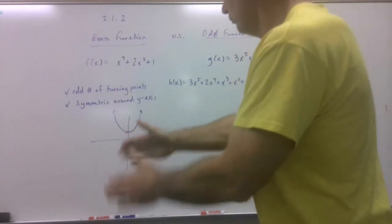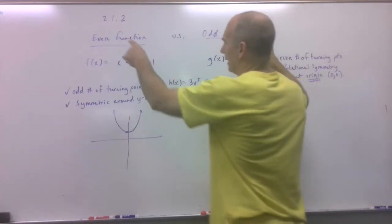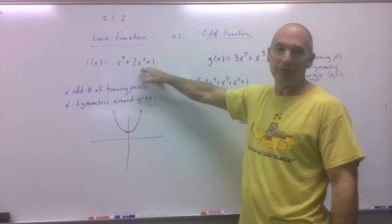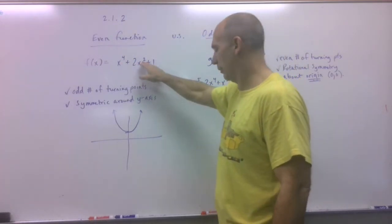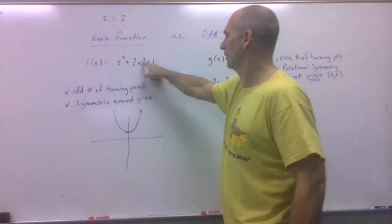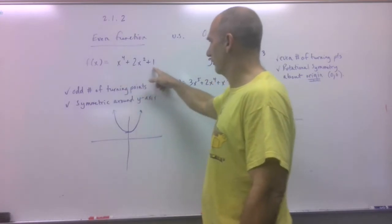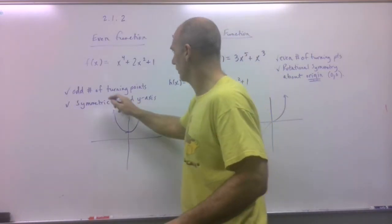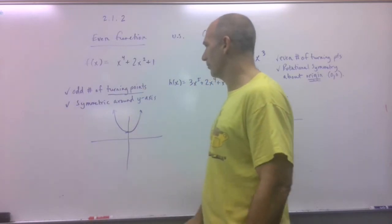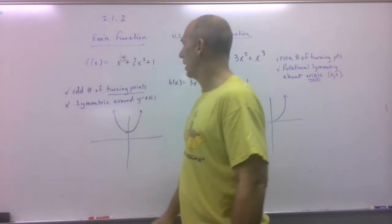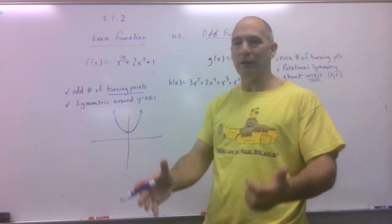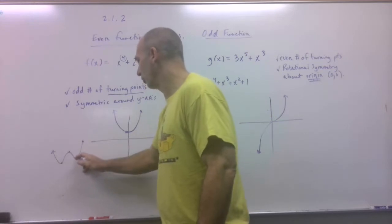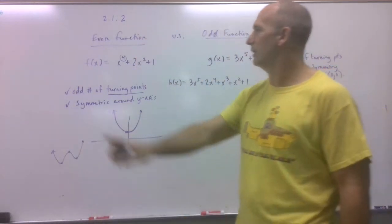We start with the idea of even functions versus odd functions. An even function has all even powers, and if you graph one, it looks a lot like y equals x squared with one turning point - an odd number of turning points. If you graph an equation with x to the fourth, x cubed, and x squared combined, you'll end up getting something with one, two, three turning points - still an odd number of turning points with an even highest power.